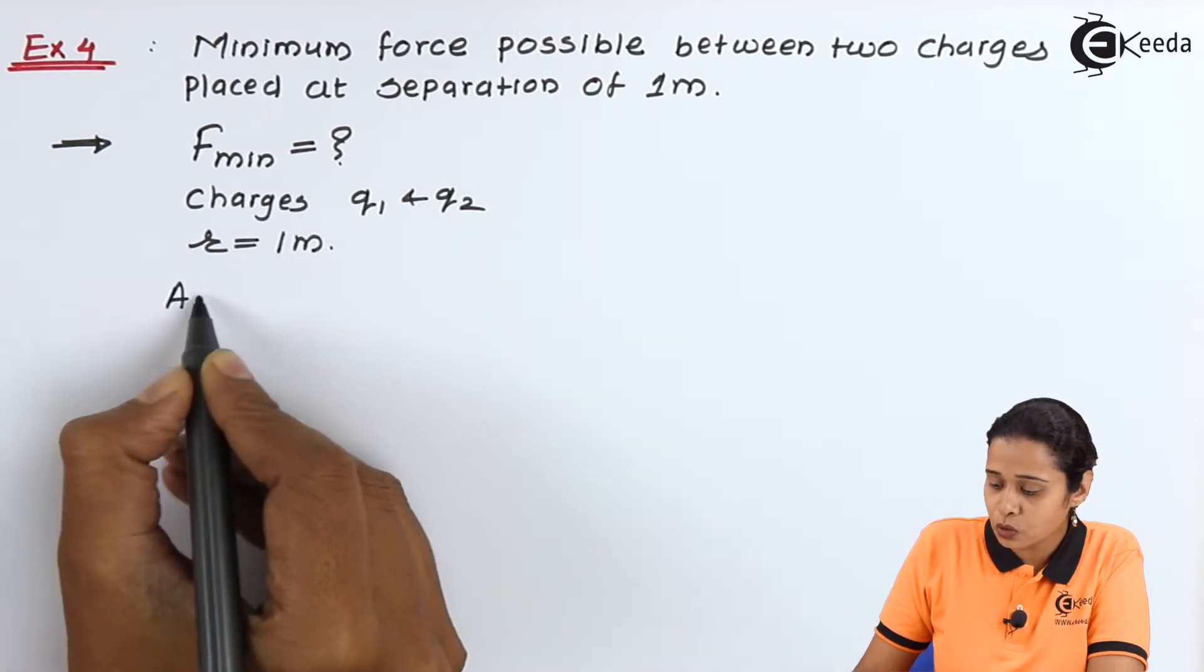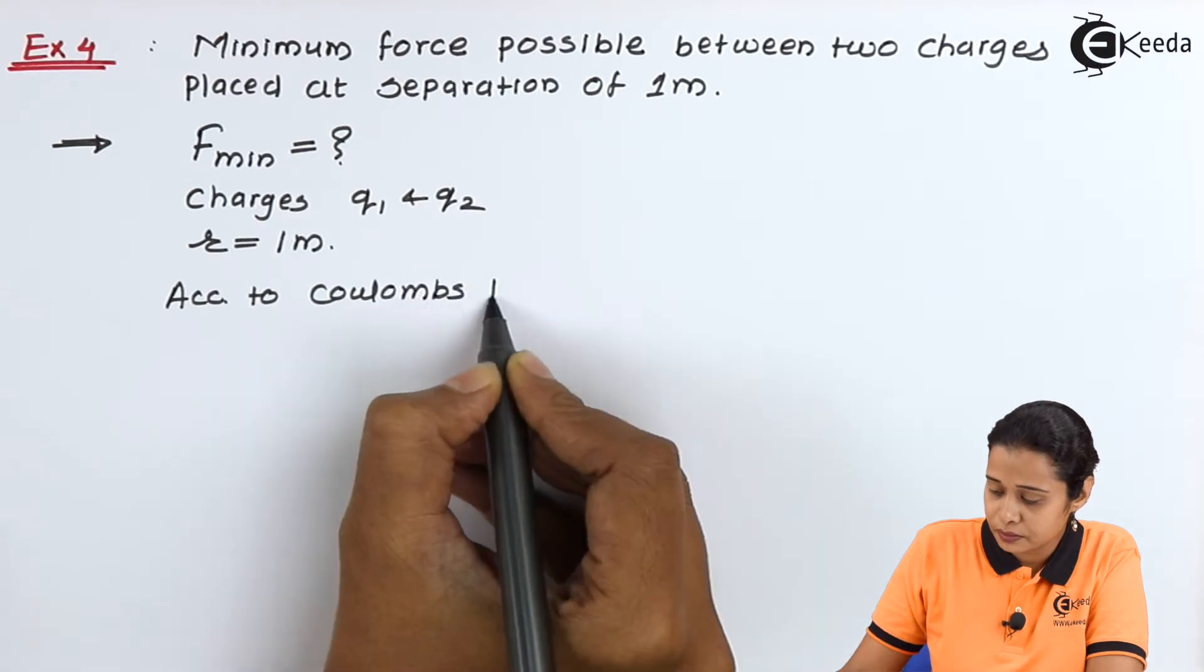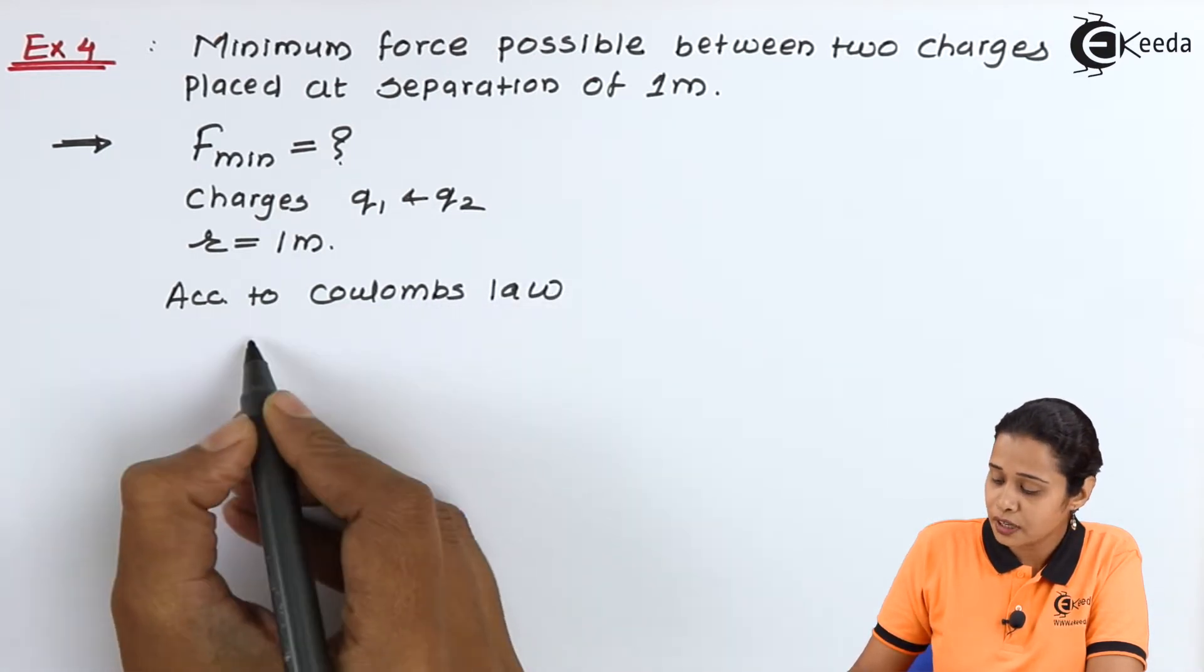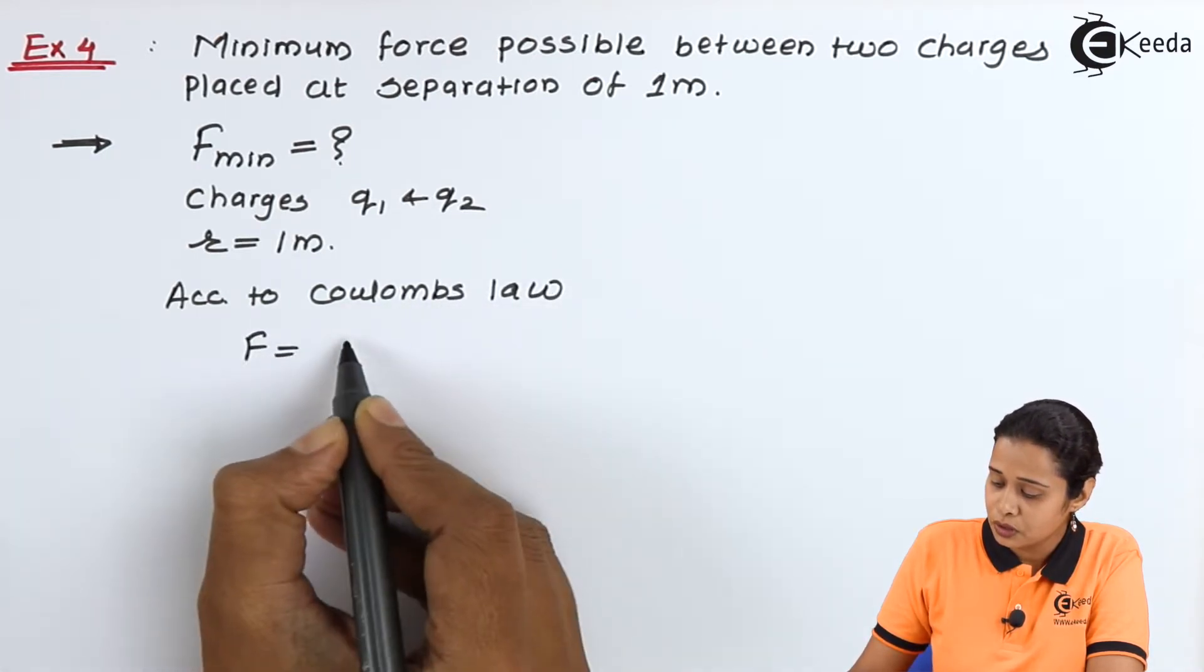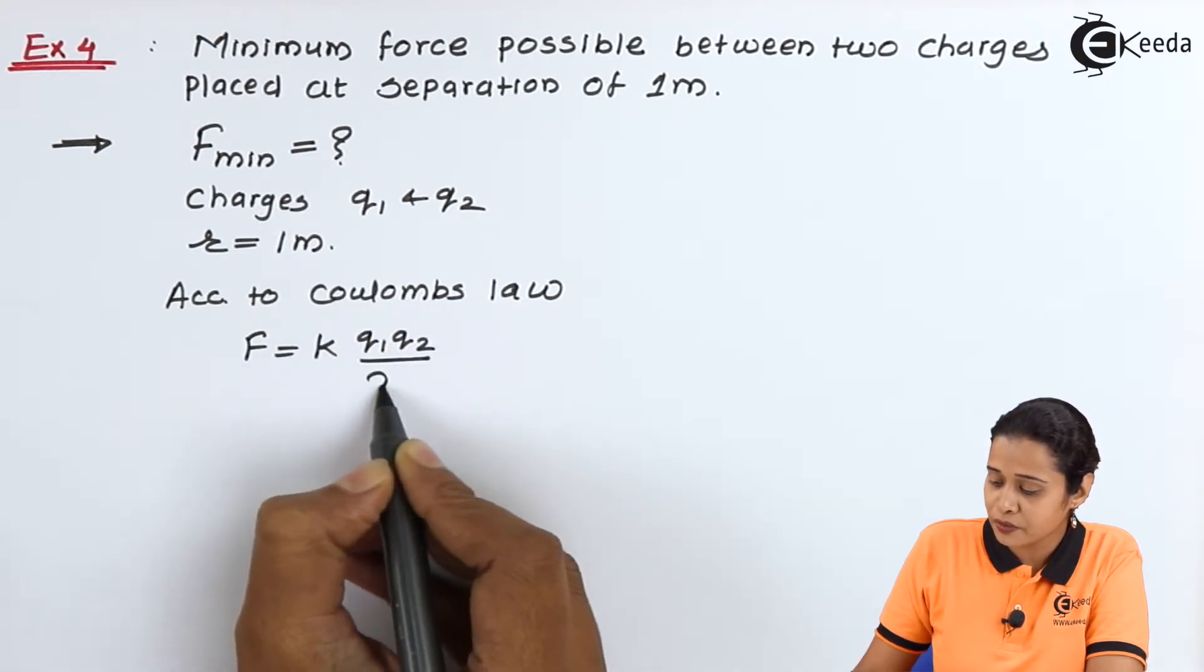According to Coulomb's law, force F equals K Q1 Q2 upon R square.